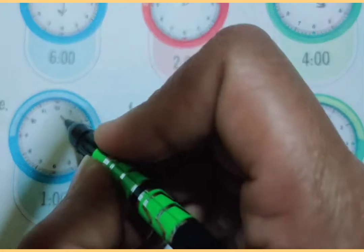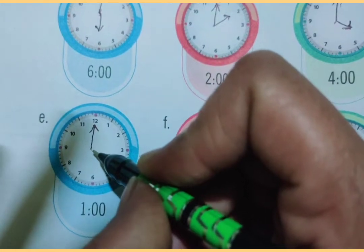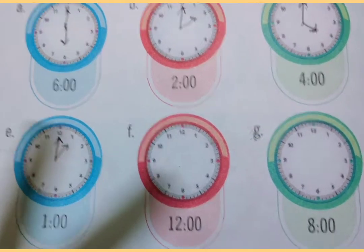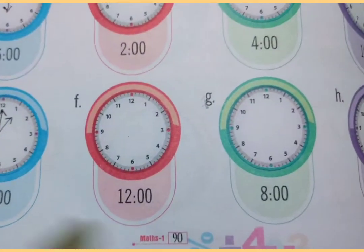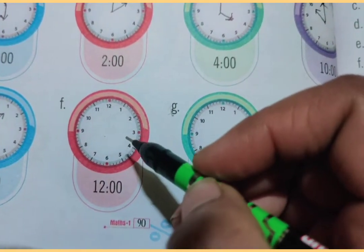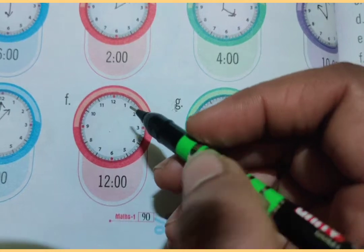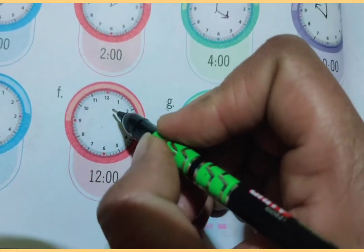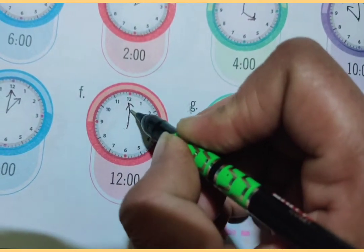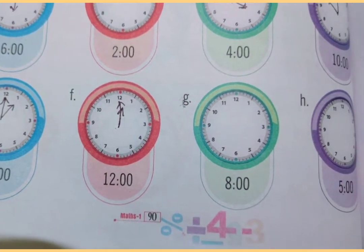Part E: the time is one o'clock. Draw the minute hand at 12 and the hour hand at 1. So the time is one o'clock. Next part F: the time given is 12 o'clock. Draw the minute hand at 12 and the hour hand also at 12. So the time is twelve o'clock.